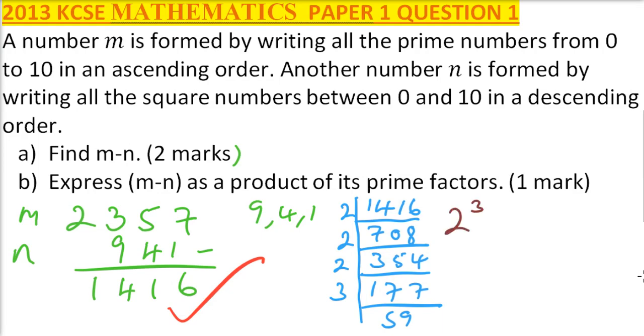2 cubed multiplied by 3 multiplied by 59. So that is how you do it. You get yourself 1 mark, and here you get 2 marks.